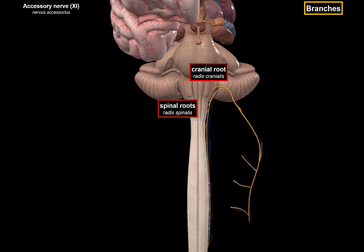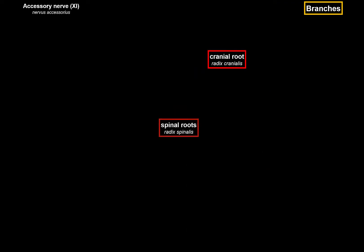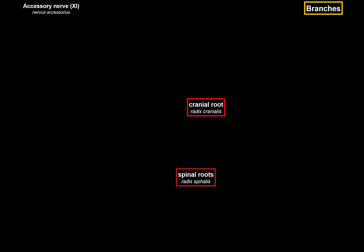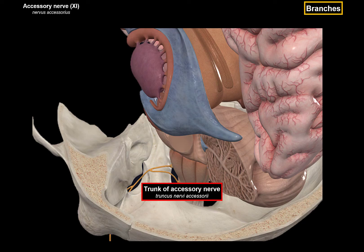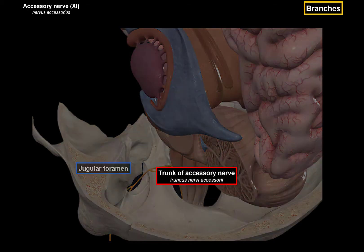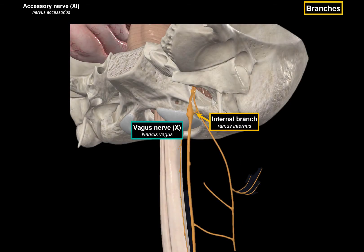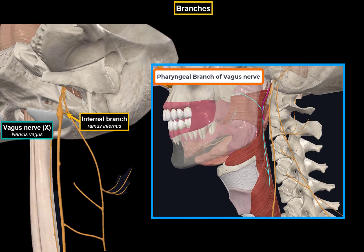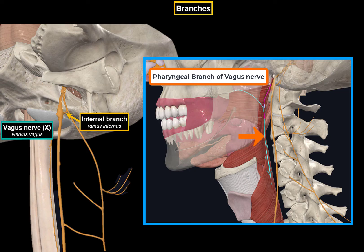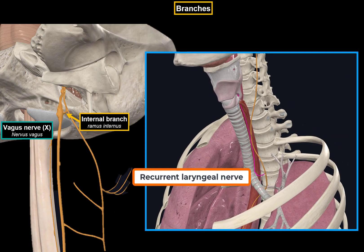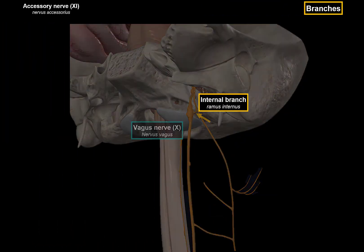Here is a more realistic visualization of how this looks. The spinal root ascends and goes through the foramen magnum, then fuses with the cranial root to form the trunk of the accessory nerve. The trunk exits the cranial cavity through the jugular foramen, then divides into an external branch and an internal branch. The internal branch joins the vagus nerve at the region of the inferior ganglion, providing extra motor fibers to the pharyngeal branch to help form the pharyngeal plexus — supplying muscles of the pharynx and palate. It may also give branches to the recurrent laryngeal nerve to innervate most intrinsic muscles of the larynx.